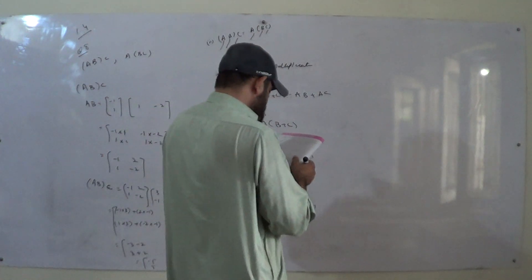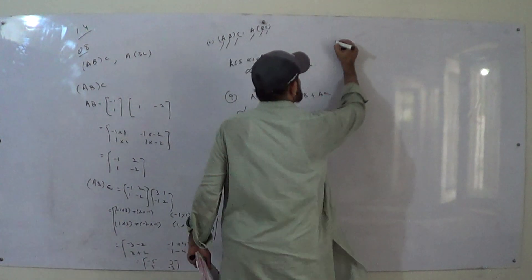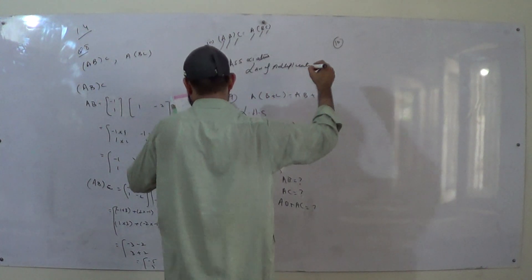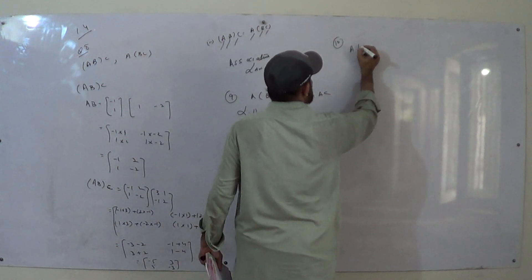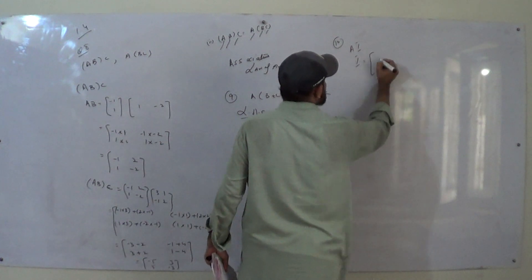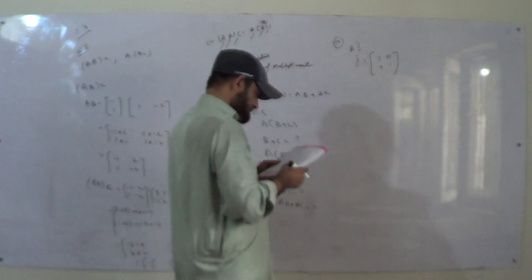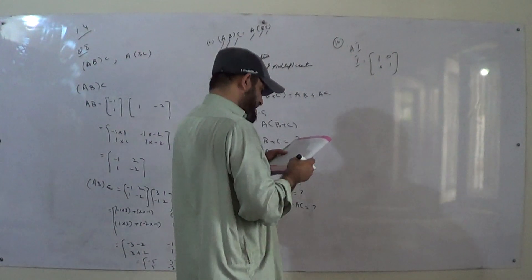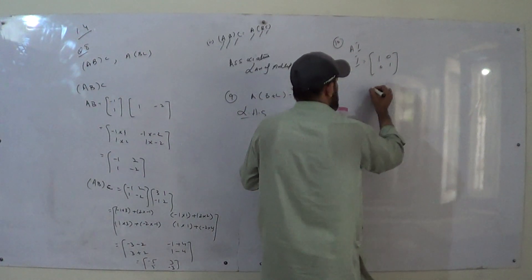Now question number 10: A times I. What is I? I is called the identity matrix. We find A times I using the identity matrix.